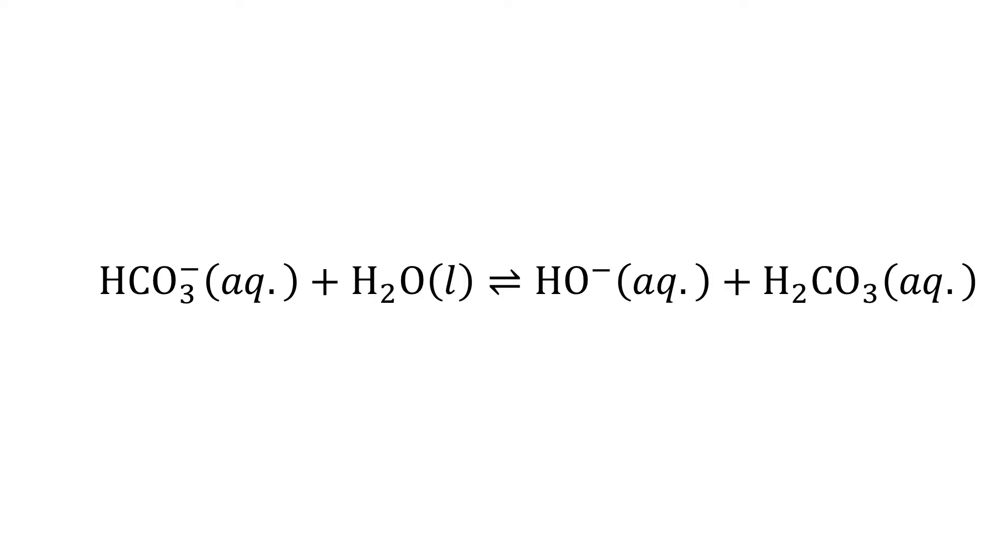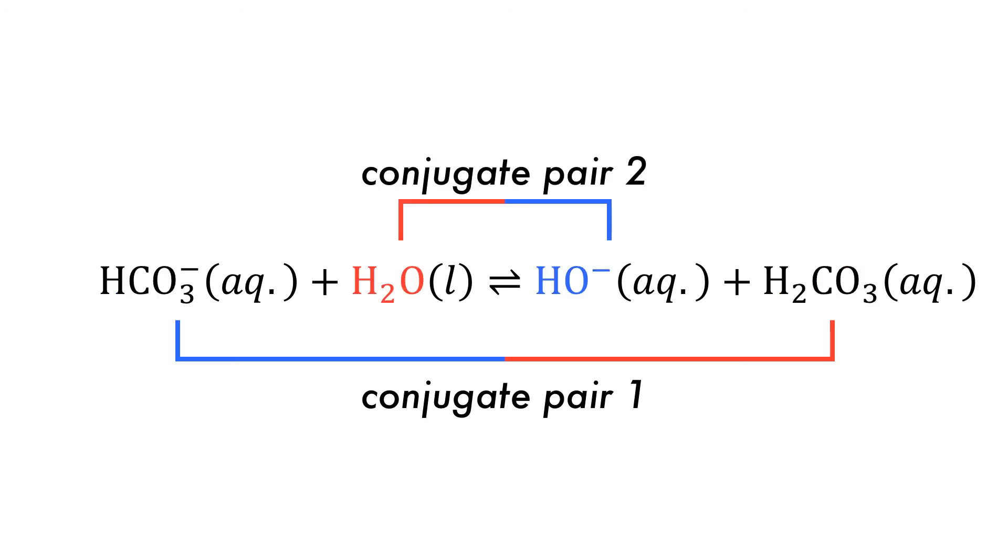Acids and bases form conjugate pairs with each other. For a weak acid such as this one, we have a conjugate pair between the acid and its base and between the water molecules.